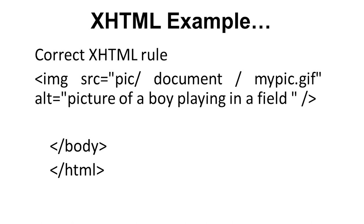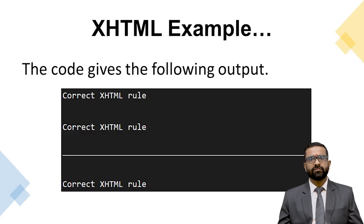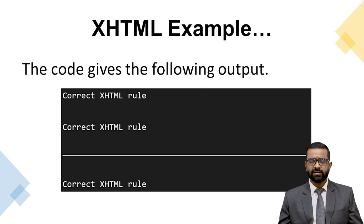The correct XHTML rule is to write the image tag with source address and alt equals 'picture of a boy playing in the field' and then close the tag with a forward slash. Closing of the tag is very important in XHTML. Then the body tag is closed and the HTML tag is closed.